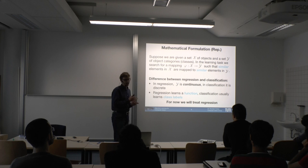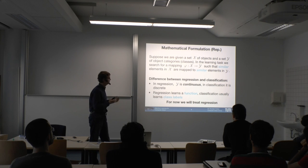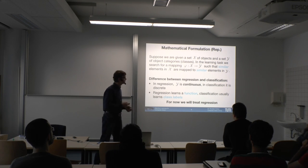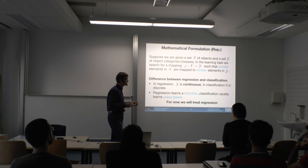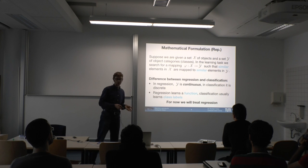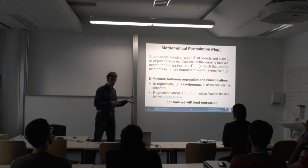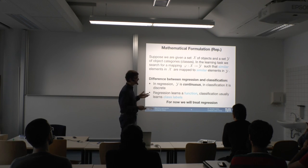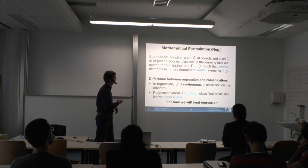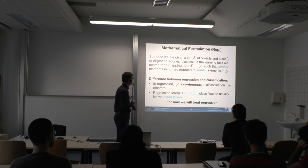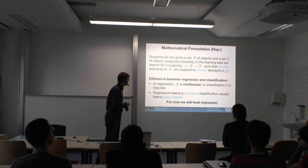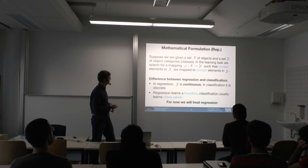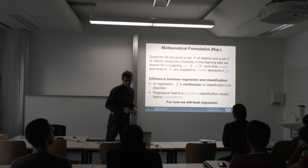What we do now is find parameters for a mapping from X to Y. The only difference between classification and regression is that Y in regression is just an arbitrary set — usually the real numbers, a continuous set. In classification, Y is a discrete set of labels — an integer, like one or minus one for binary classification. If Y is continuous, then we have regression, and we learn a function mapping from X to Y.